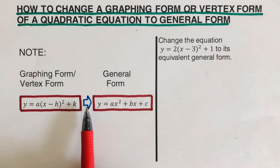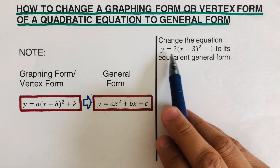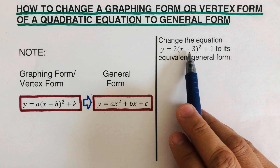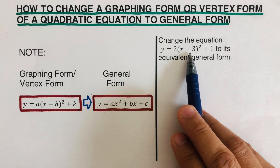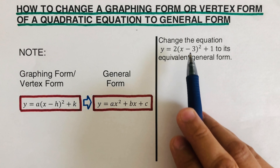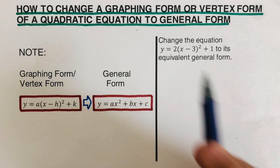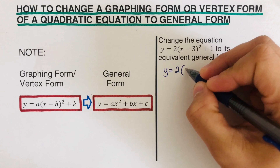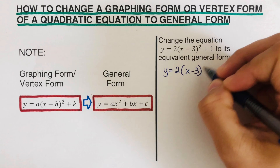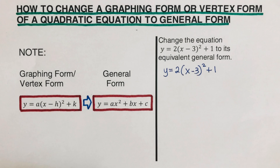Let's take this first example: y equals two times the quantity x minus three squared, plus one. The vertex for the graph of this equation would be at (3, 1). So I'm going to rewrite it: y equals two parentheses x minus three squared plus one.